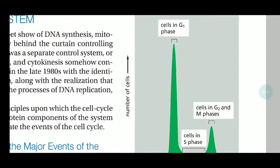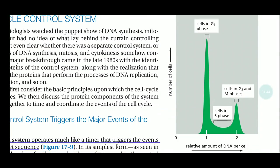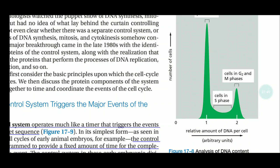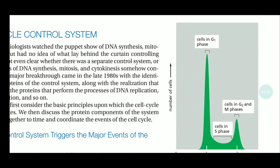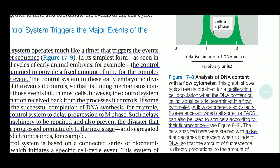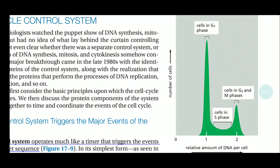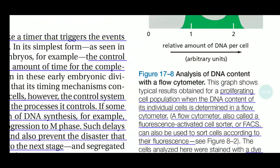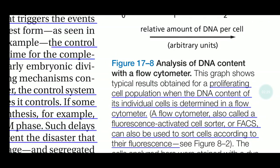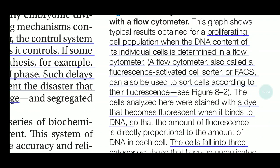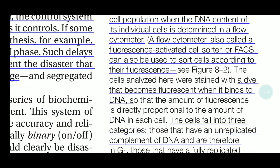In this picture, the y-axis shows the number of cells and the x-axis shows the relative amount of DNA per cell. This graph is plotted using flow cytometry — specifically, a flow cytometer tagged with a fluorescence-activated cell sorter. The fluorescence molecule gets tagged with DNA, and the fluorescence emission detects the amount of DNA. The amount of fluorescence is directly proportional to the amount of DNA in each cell.